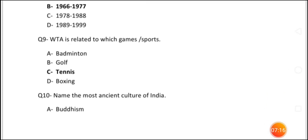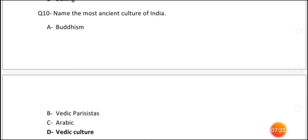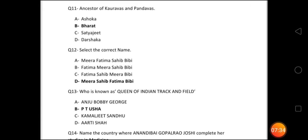Question number 10: Name the most ancient culture of India. The four options were Buddhism, Vedic culture, Arabic, and Vedic culture. Question number 11 relates to the ancestors of the Kauravas and Pandavas. Their ancestors — their purvaj — were Bharat, who was the son of Shakuntala and King Dushyant. So Bharat was the ancestor of both the Kauravas and Pandavas. The correct answer is Bharat.